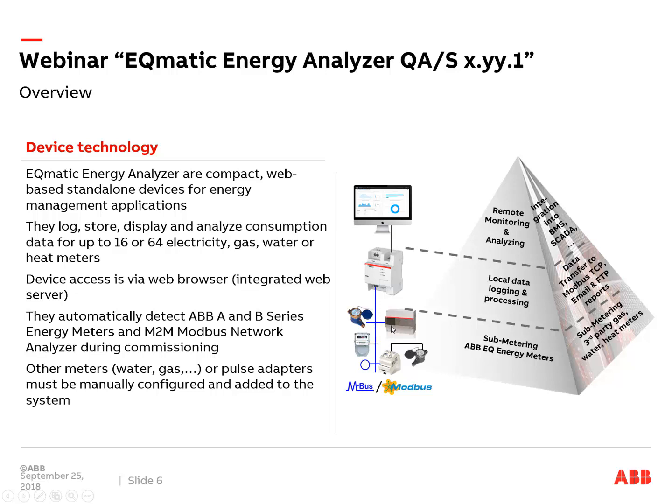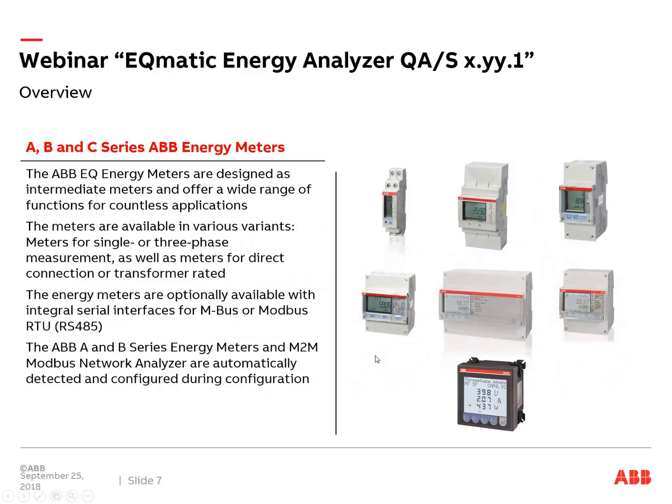A big advantage is that when you use ABB EQ energy meters, they are scanned automatically and configured. During commissioning you don't need to set data point types. When using third-party meters, you do need to configure data point types manually. For meters without MBUS or Modbus interface — like a typical water meter — pulse adapters are available on the market. Via a pulse adapter, you collect pulses and convert them to MBUS or Modbus protocol.